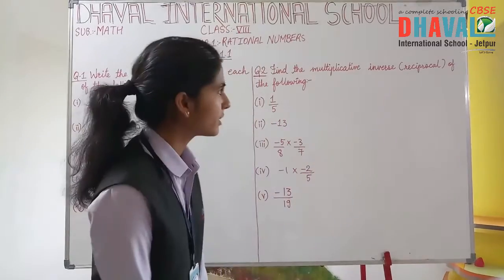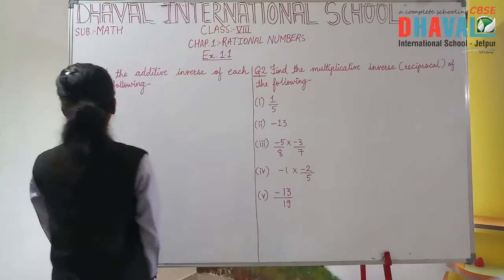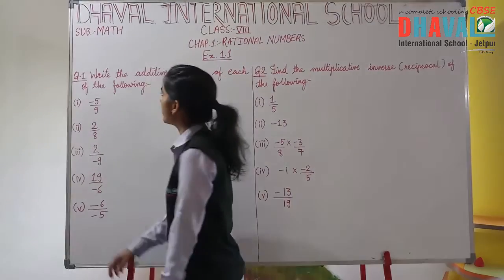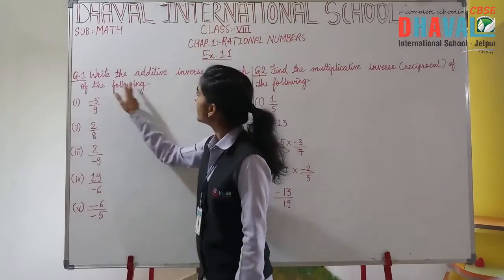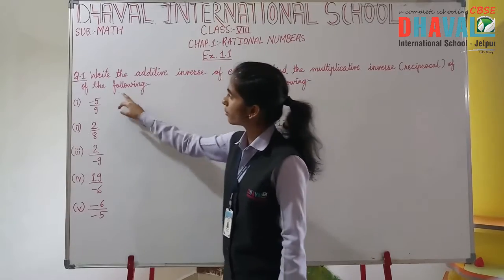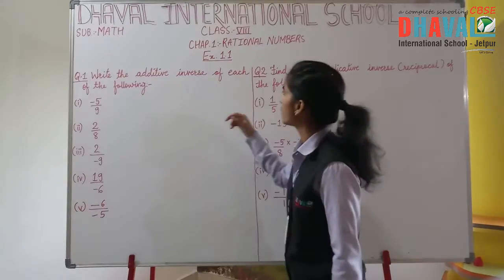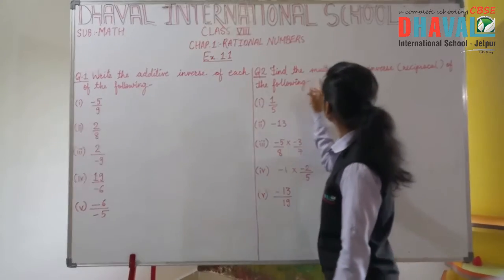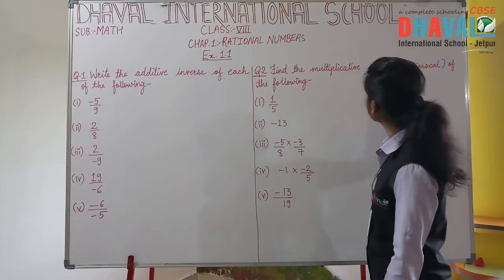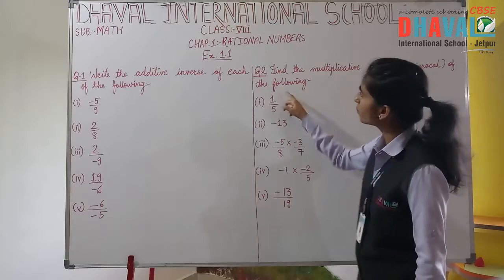So let's see what this question says. Question 1 is: write the additive inverse of each of the following. And question number 2 is: find the multiplicative inverse of the following.